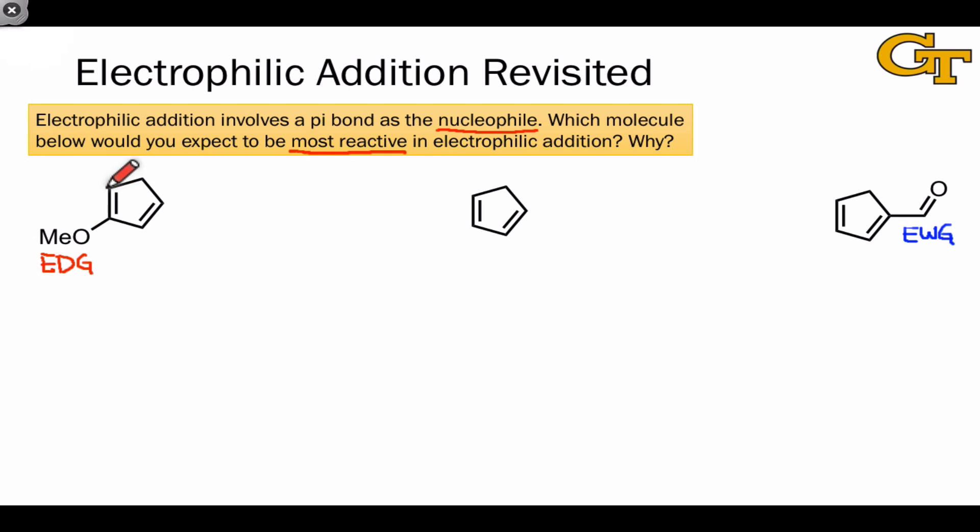Electron donating groups raise the orbital energies of conjugated pi systems. This means that they make conjugated pi systems stronger nucleophiles. You can almost think of this in terms of an electron currency analogy. The donating group is literally making the pi system richer in electrons.